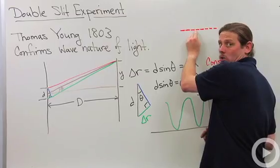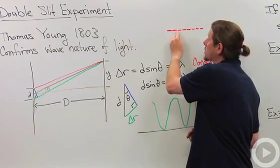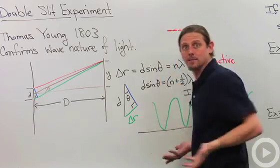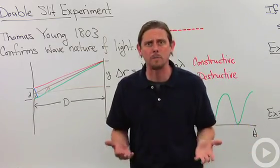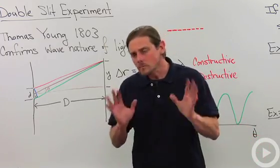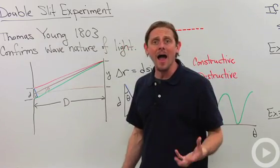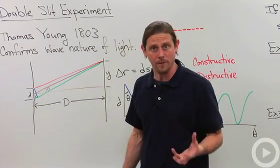Then we've got dark spot, no light at all, then another maximum, dark spot, maximum, dark spot, maximum. This was not at all expected if there were just particles going through, because how are you going to get a dark spot? The way that we understand it is by using Huygens' theory of wave interference.